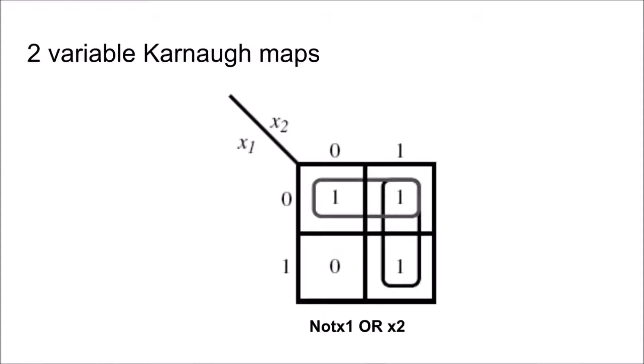Take this two variable Karnaugh map for example, representing the function not x1 or x2. The reason for this is that not x1 will output a 1 in every square that corresponds with the input that is not 1, and x2 will output a 1 in every square that corresponds with the input that is 1.